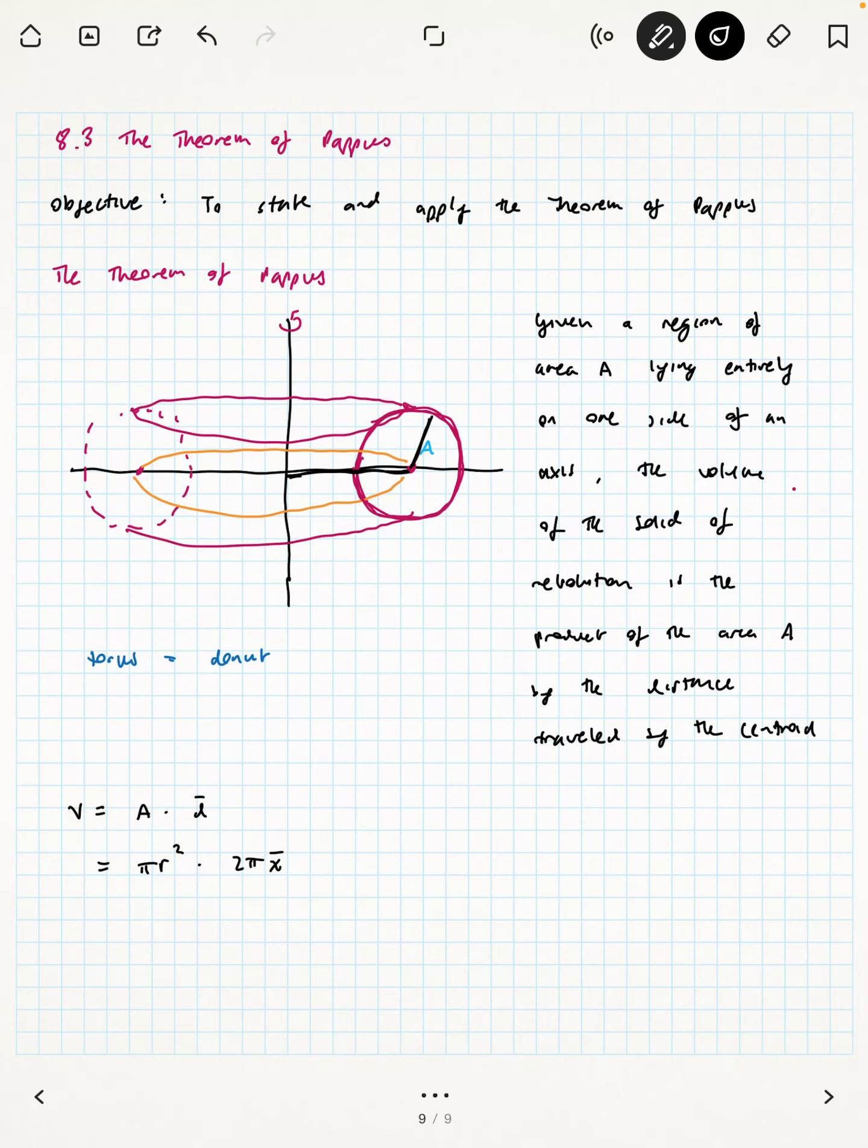So this torus has two components to it, basically. It's how large the radius of the cross-section itself, and how far away the center of that cross-section is from the axis of rotation. So all told, this is going to be π²r²x̄.